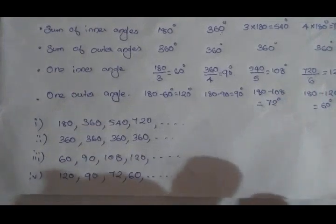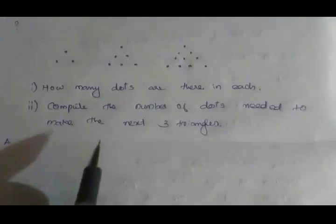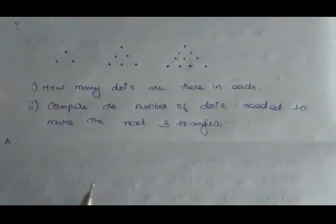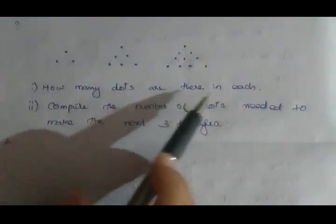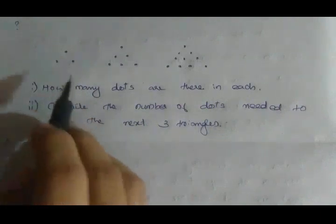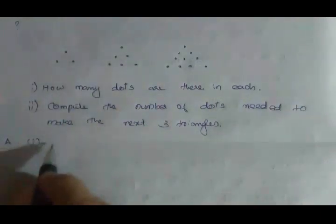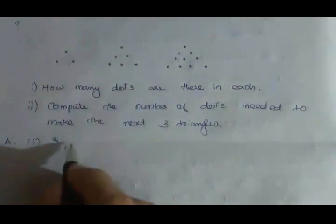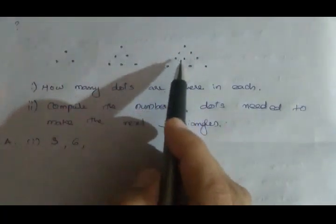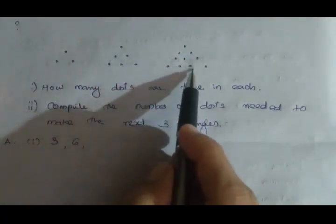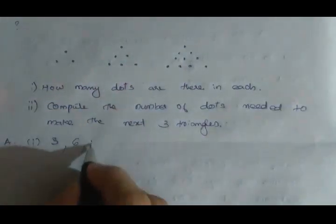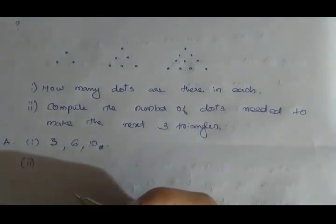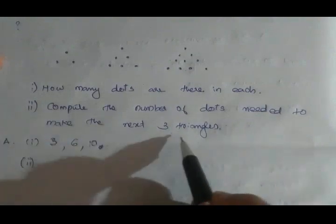At the end of the sequence, triangles are formed using dots. How many dots are there? In the first triangle: 1, 2, 3 dots. In the second: 1, 2, 3, 4, 5, 6 — 6 dots. In the third: 1, 2, 3, 4, 5, 6, 7, 8, 9 — and the next has 10 dots.